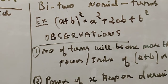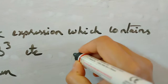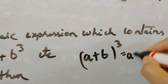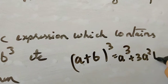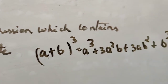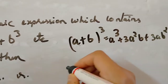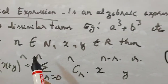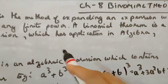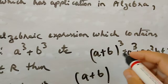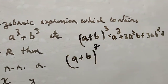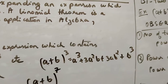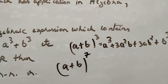You also know a plus b whole cube: a cubed plus 3a squared b plus 3ab squared plus b cubed. Now when this power n is raised to any finite power — finite means countable — if it is given as 7, how are you going to calculate a plus b to the power 7? When the power is higher, it becomes difficult to calculate directly.